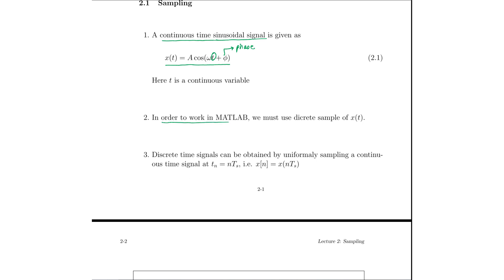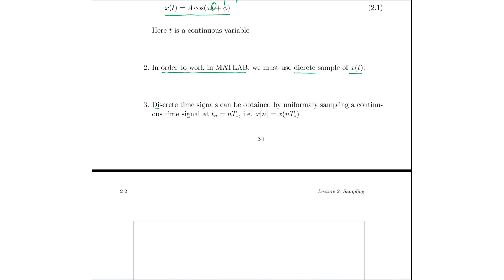In order to work in MATLAB, what we have to do is we have to discretize the samples of x(t). Since MATLAB works on discrete samples, this is an important step. The discretization of continuous time signals can be obtained by uniformly sampling the continuous time signal, and that can be done by substituting t = nTs in the continuous time waveform.